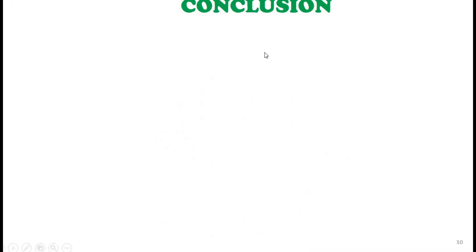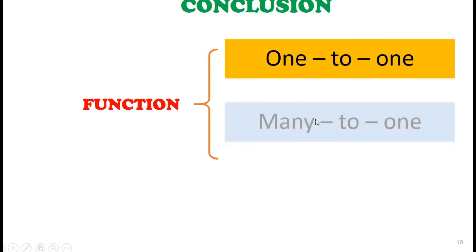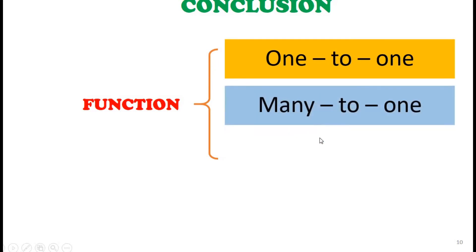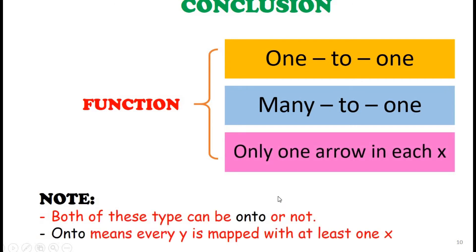In conclusion, functions include one-to-one relations and many-to-one relations, with only one arrow leaving each x. Note that both of these types can be onto or not onto, where 'onto' means every y is mapped with at least one x.